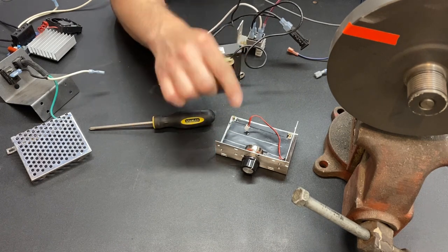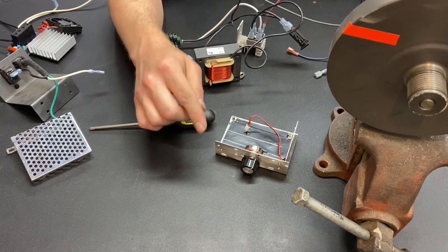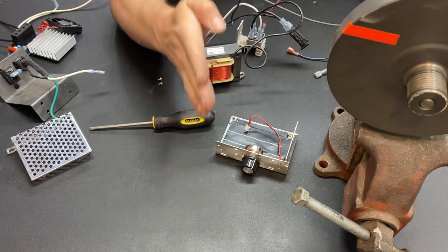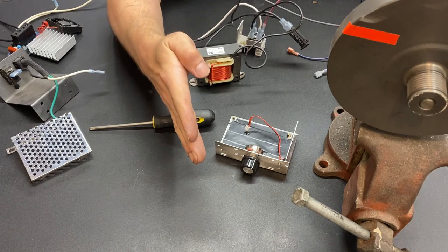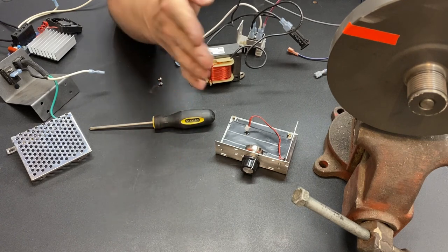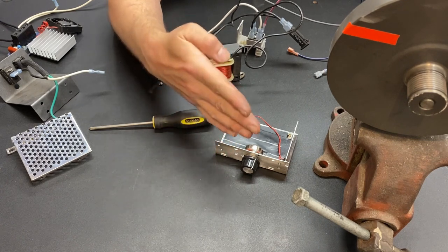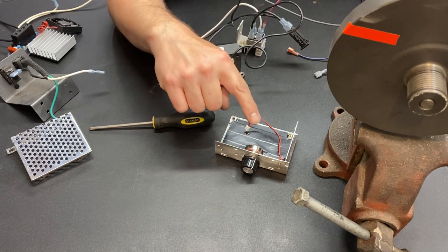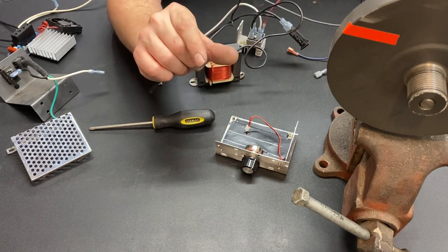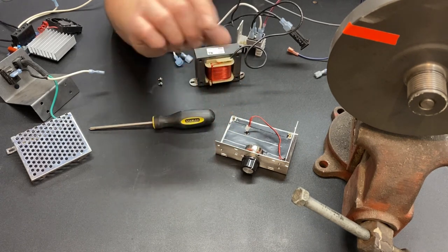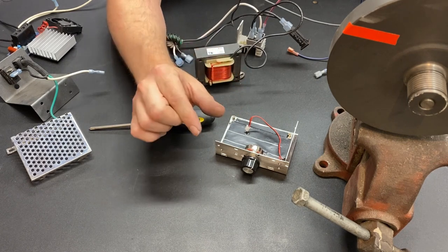Now, the advantage of doing that is the smaller potentiometer gives you a fine speed control, and the bigger potentiometer gives you a coarse speed control. So, one full turn is 120 kiloohms, and one full turn is 20 kiloohms.